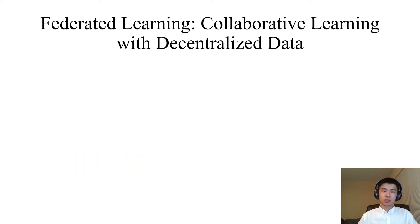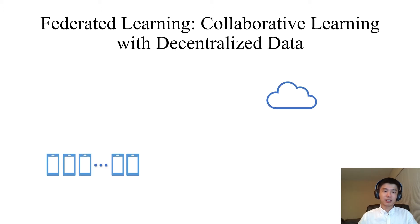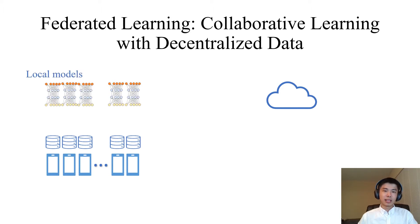Federated learning was proposed to solve the problem of collaborative learning with decentralized data. In federated learning, there are many worker devices and a master device. Each worker has its own local training data and maintains a local model. The master also maintains a global model by aggregating local models.